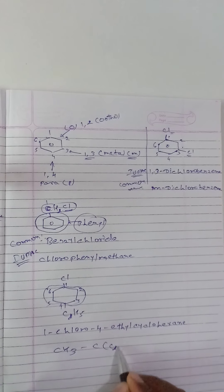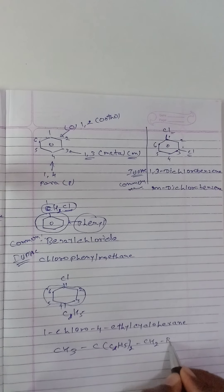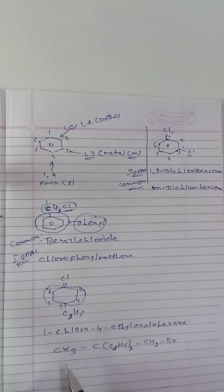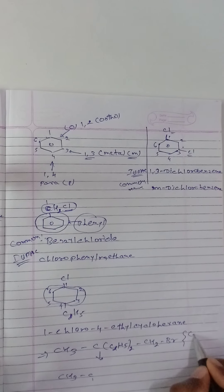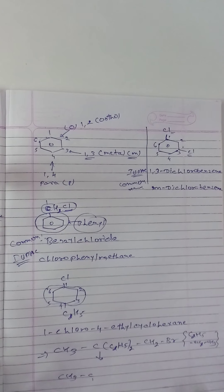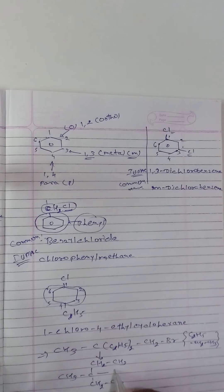Next example: CH3-C(C2H5)2-CH2Br. First simplify the structure: the central carbon has two ethyl groups (CH2CH3 each) and a CH2Br linkage. Writing it out: CH3 connected to C with two CH2CH3 groups and a CH2Br group.